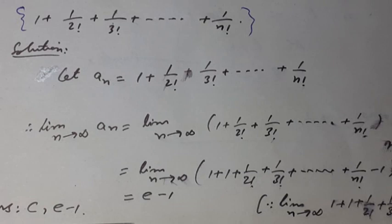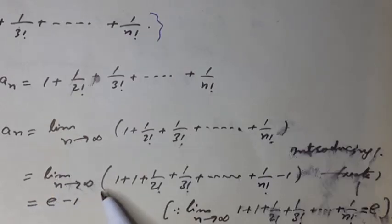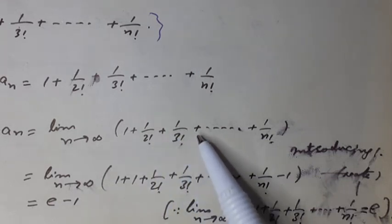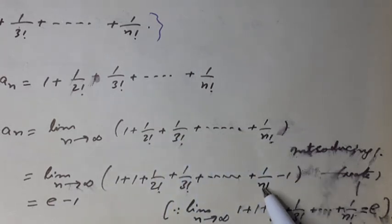We can write equals limit n tends to infinity of 1 plus 1 plus 1 over 2 factorial plus 1 over 3 factorial plus so on plus 1 over n factorial minus 1. Note it, and it can be written as